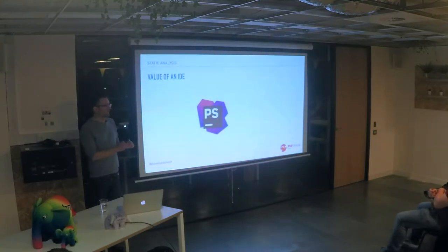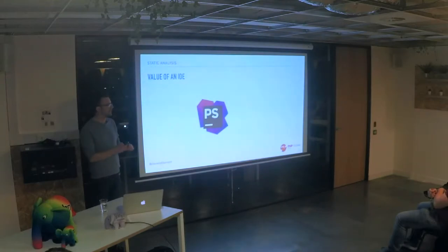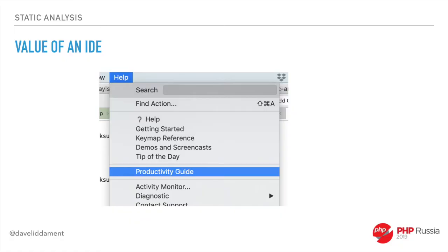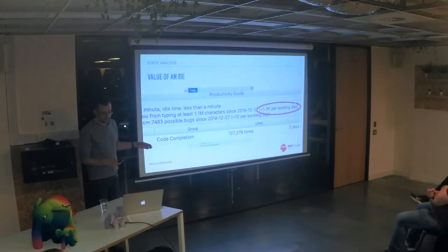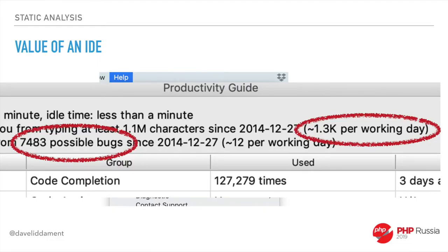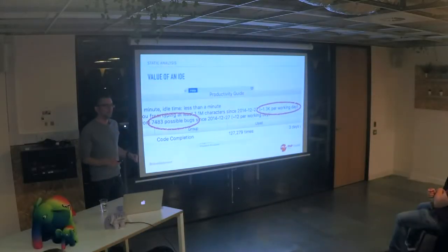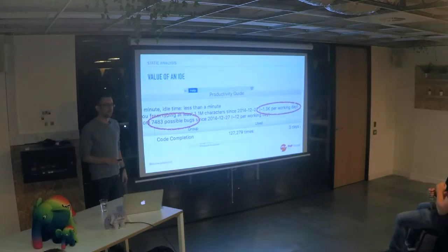If you're struggling to find the value of PHPStorm, you can download it and try it free for a month. When that month is up, go into the Help section, then the Productivity Guide, and it tells you things like: it's saving me typing 1,300 characters per day, it's found 7,483 possible bugs — or 12 per working day. You'll probably find you can associate a value with that bug and it will be way more than the cost of a PHPStorm license.